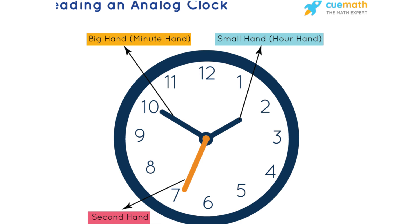We also have the third hand — some clocks don't have this. It's called the second hand, or 'jarum saat.' This hand moves continuously, unlike the other two hands. Because it shows seconds, its movement is more active. It is usually thinner and slightly longer than the minute hand.